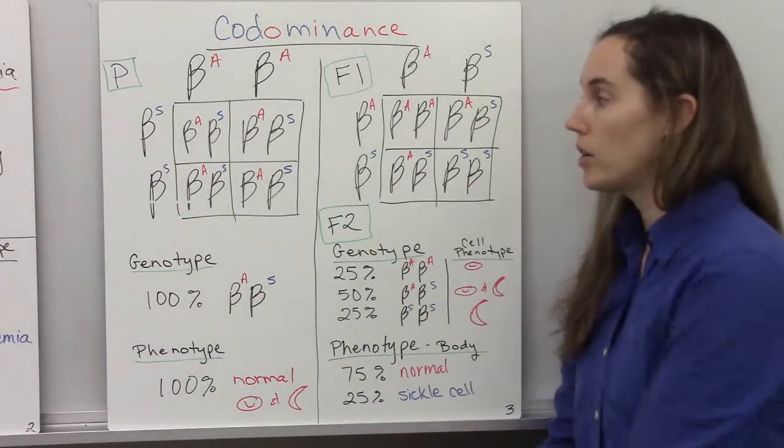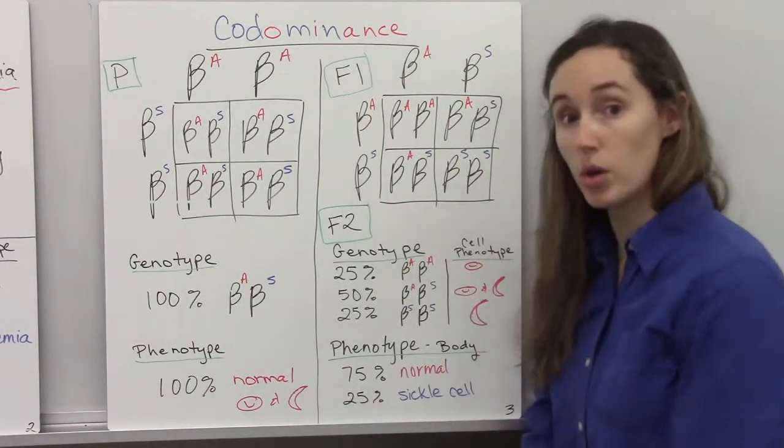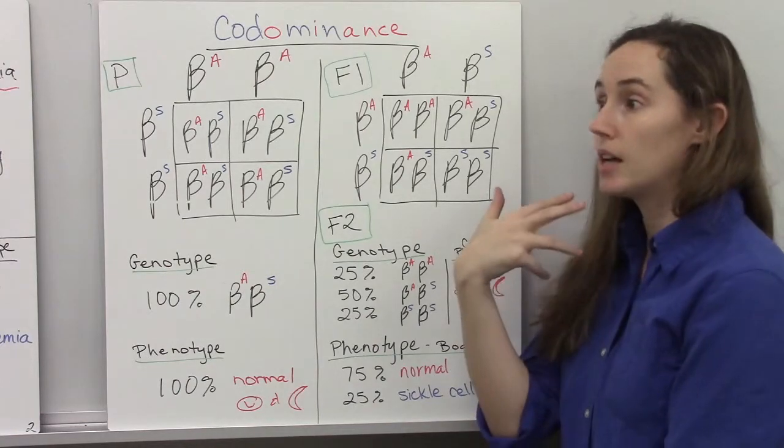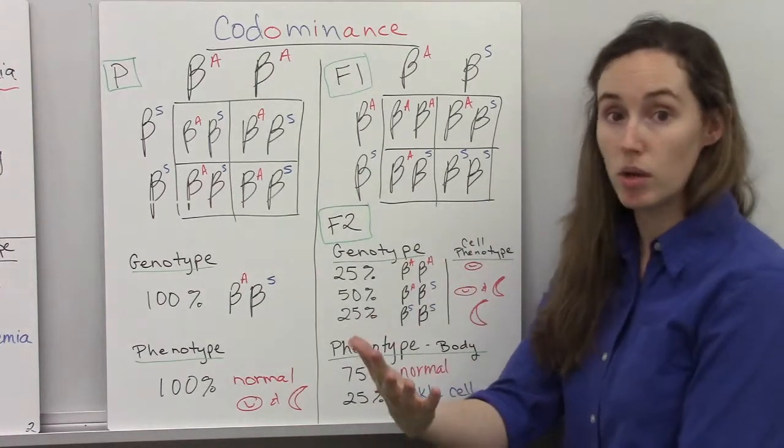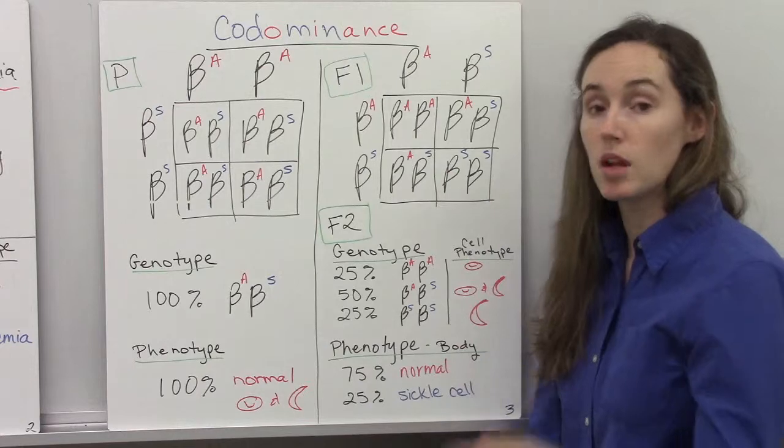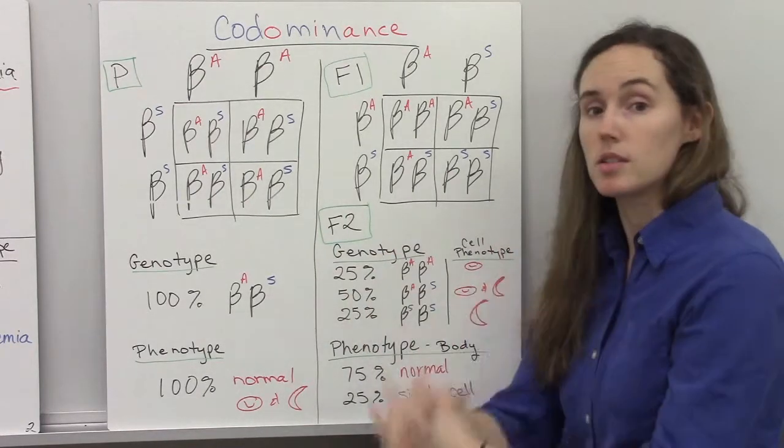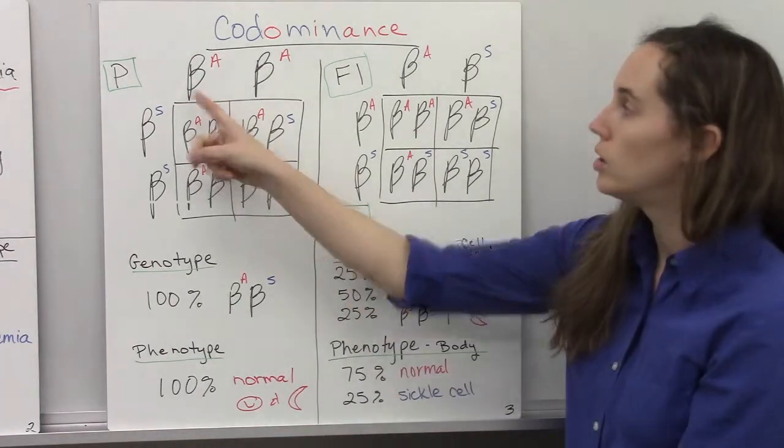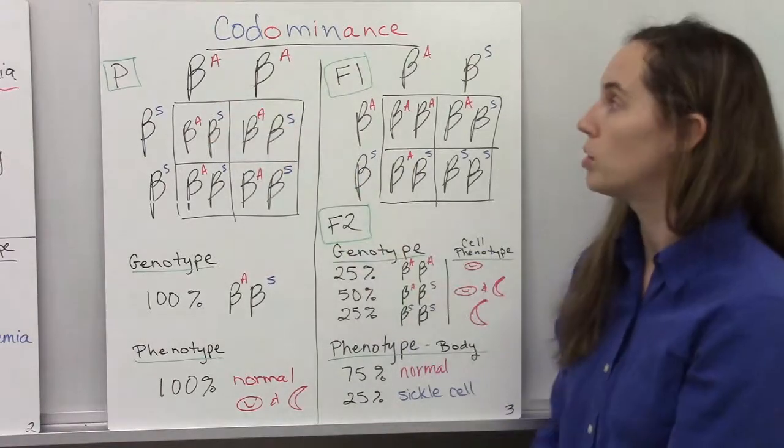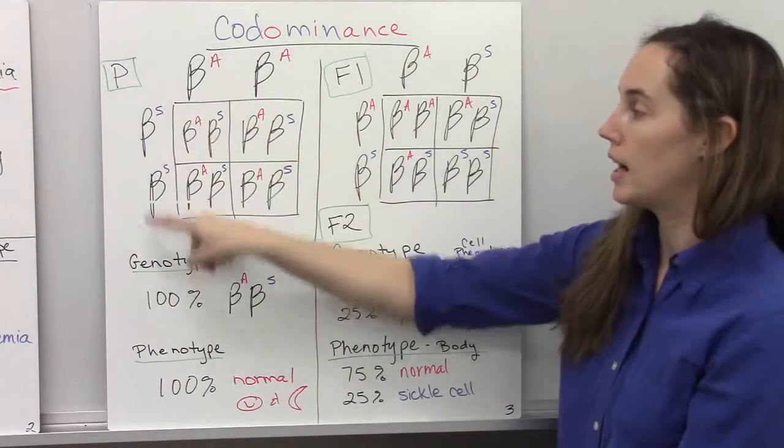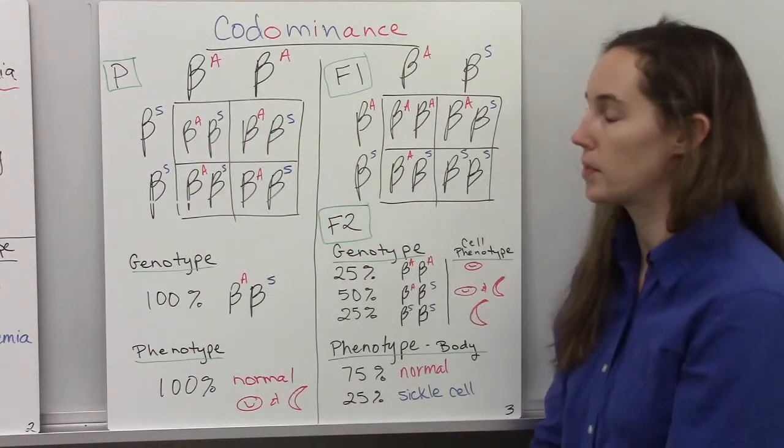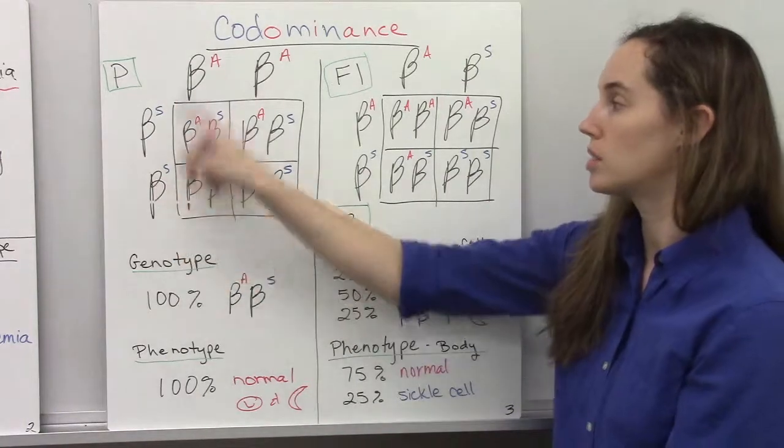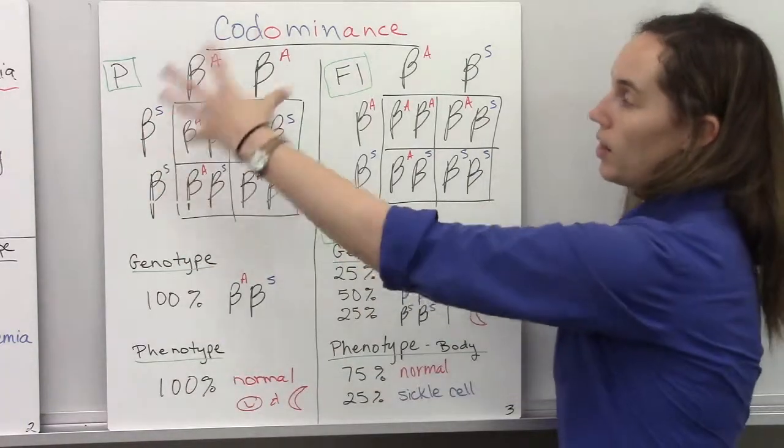So here are some Punnett squares to show the crosses and the genotypic and phenotypic ratios of organisms that are products of those crosses. So if we have a parent who is normal for the beta globin gene and one that is homozygous for sickle cell, and they mate,